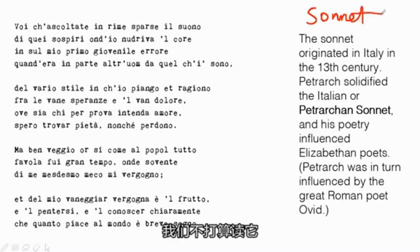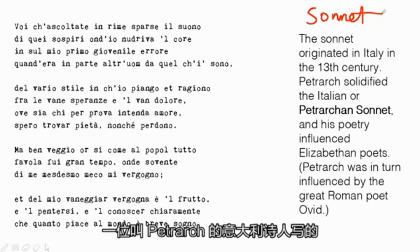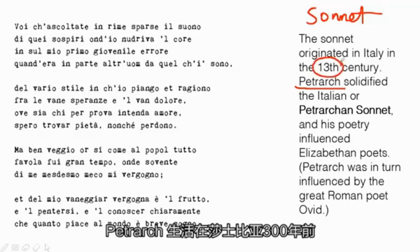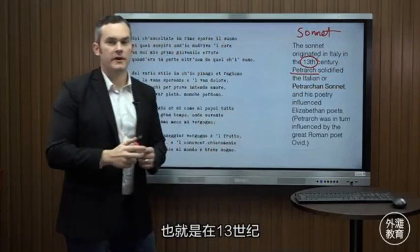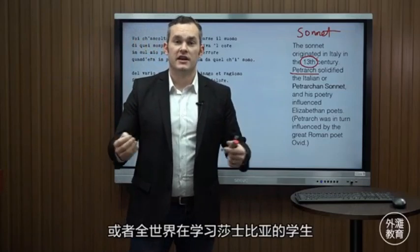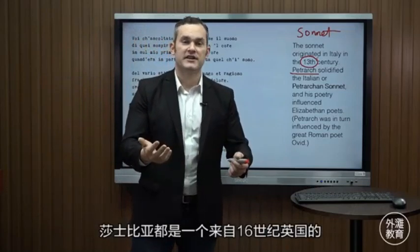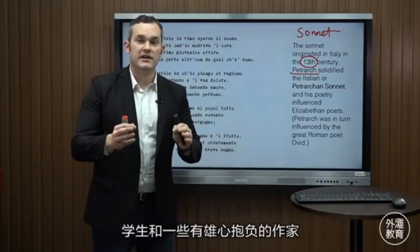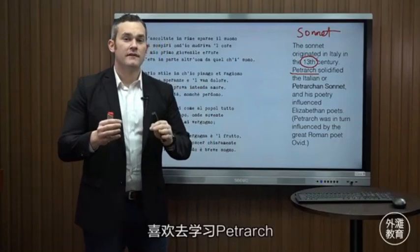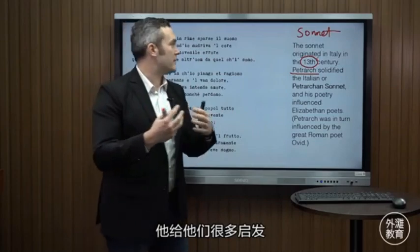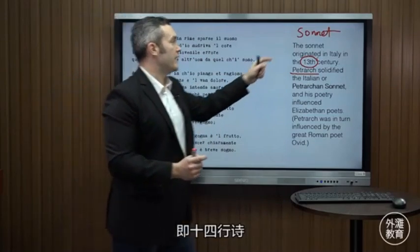This sonnet is actually in Italian, written by a poet from Italy named Petrarch. Petrarch worked about 300 years before Shakespeare, in the 13th century. Just like students today in China and around the world are studying Shakespeare — a poet and dramatist from 16th century England — in Shakespeare's day, students and aspiring writers loved to study Petrarch. They were really inspired by this form of poem that he created, called the sonnet.